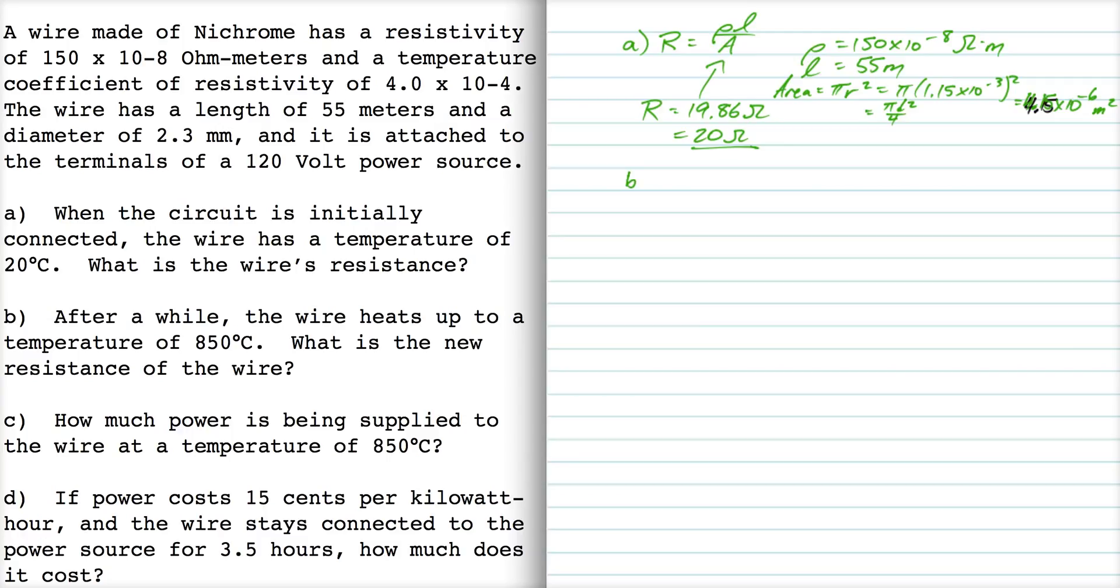Part B asks for the new resistance after we heat up the wire. So our formula for that is that the resistance is equal to the original resistance times 1 plus alpha delta T.